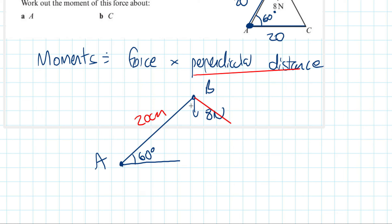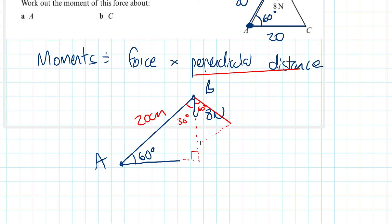We need to find what the angle is to determine our perpendicular force. There are multiple ways to do this. The first way is to draw a right-angle triangle here. The interior angles must sum to 180, so with 90 and 60, this must be 30 degrees. Alternatively, you could make a triangle using 60 degrees.